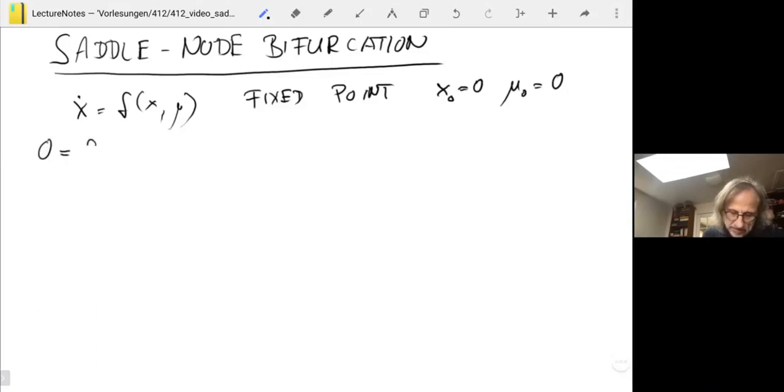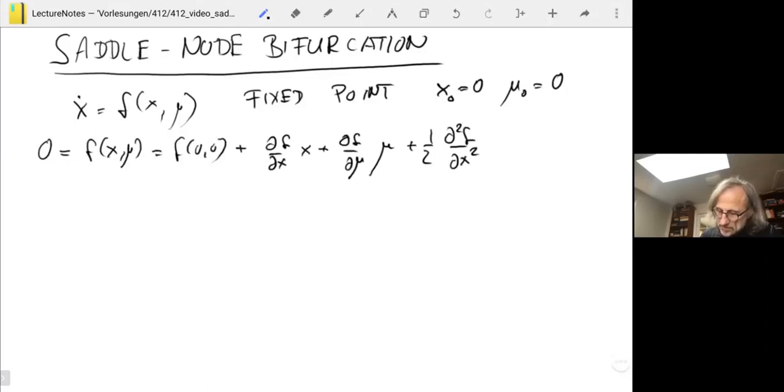f of x and mu equals f of zero and zero plus df/dx times x plus df/dmu times mu. Now we have to take a bunch of other terms still, which makes this a little bit more cumbersome. I go all the way to second order in x and mu, and then the other terms we'll neglect. We'd like to simply solve for x as a function of mu. Let's see whether we can do that and under what conditions.